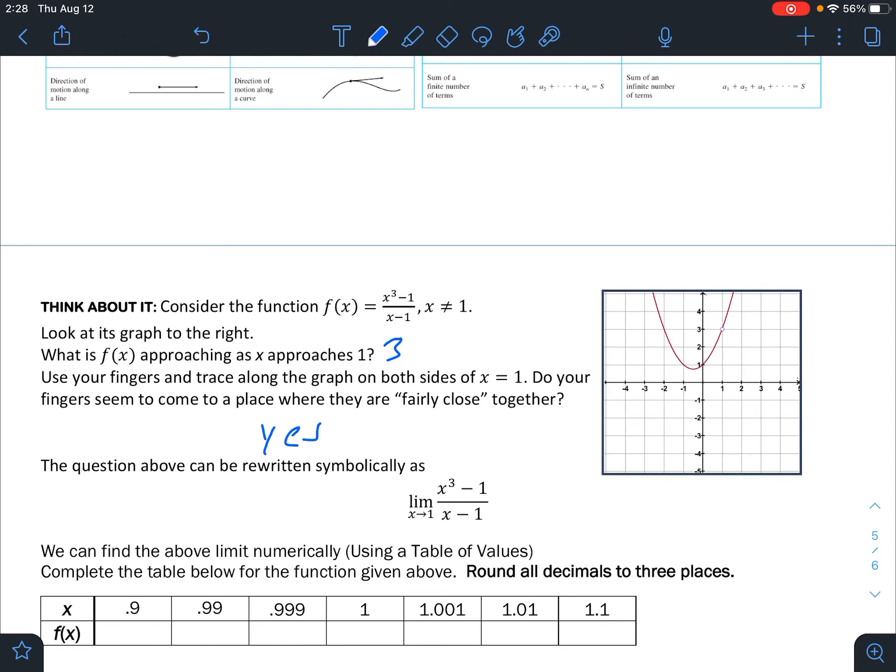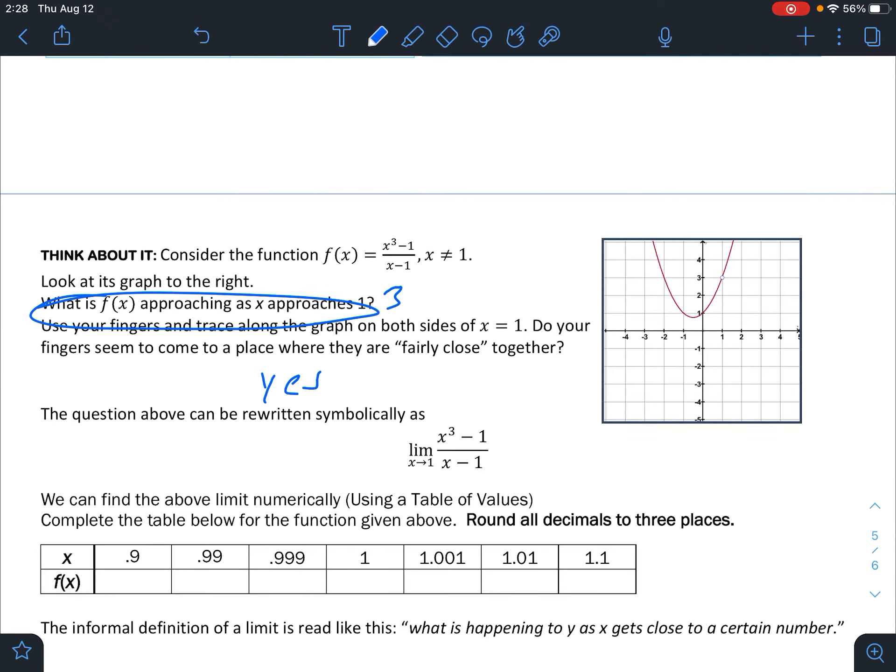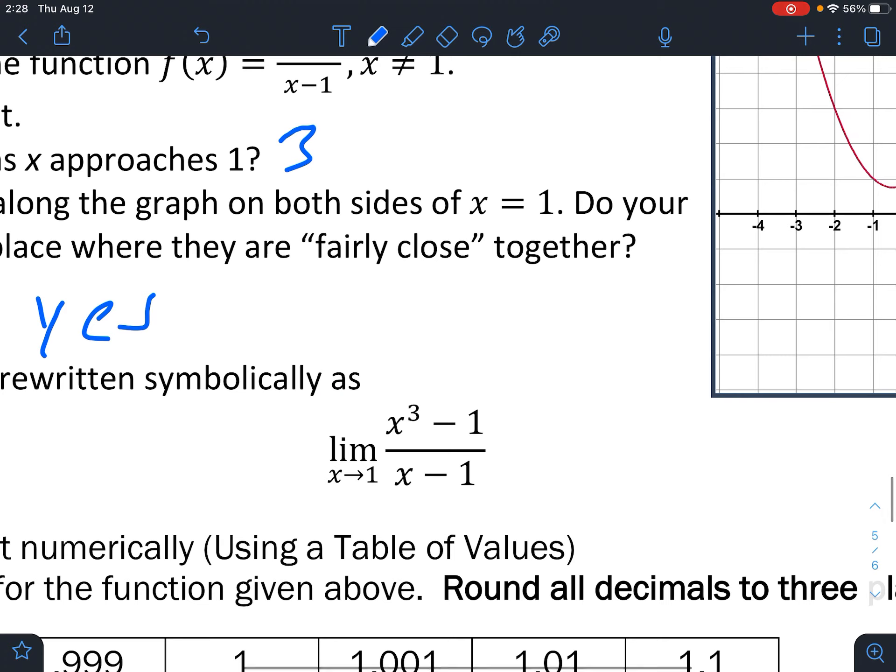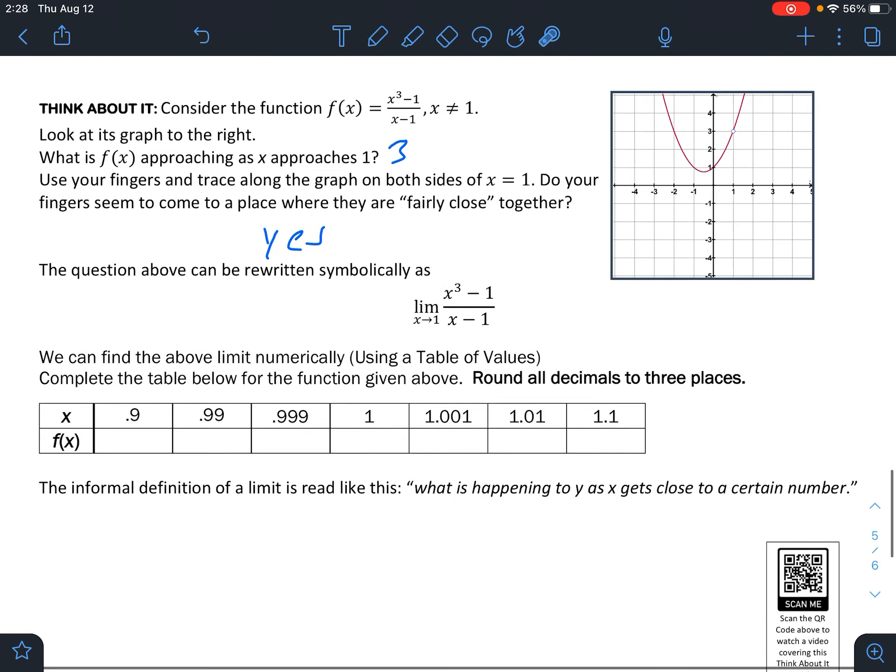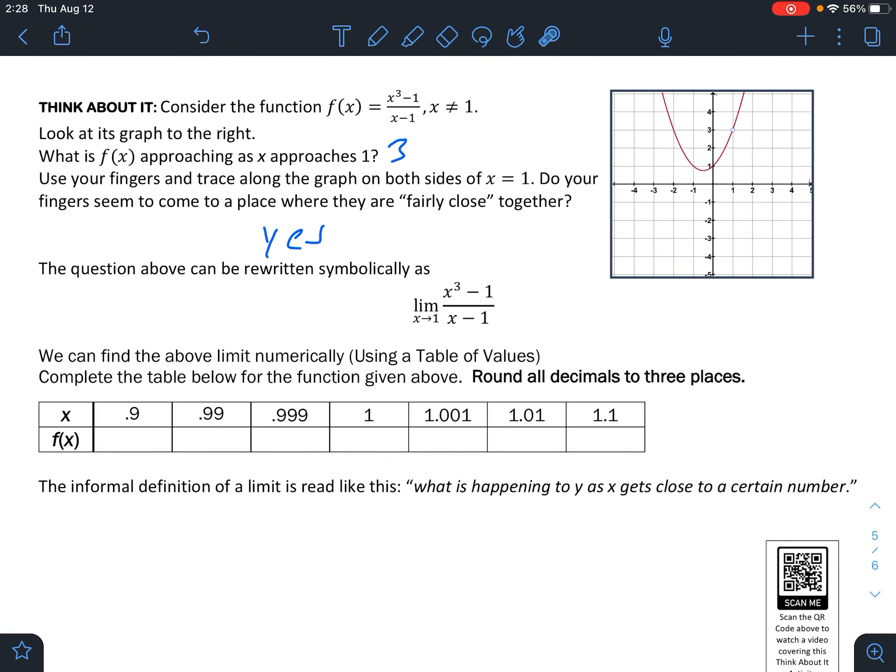The question above, this right here, is basically written like this. And we read this as the limit as x approaches 1 of this function. So how are we going to do that right now? Well, we can't just put 1 into the equation because it's going to spit back 0 over 0, and we don't know how to get around that yet.